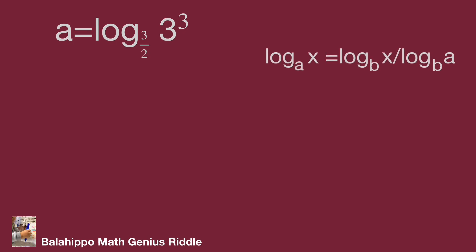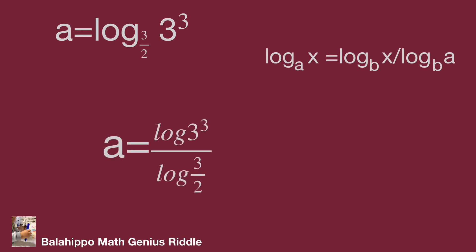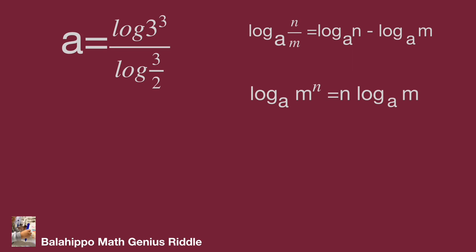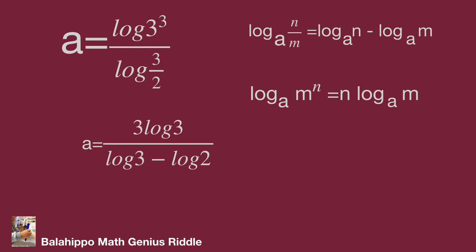Using the logarithm rule: log base A of X equal to log base B of X over log base B of A. We get a equal to log 3 cubed over log 3 over 2. Then applying the logarithm rule log base A of N over M equal to log base A of N minus log base A of M, and the rule log base A of N power N equal to N times log base A of N, we get a equal to 3 log 3 over log 3 minus log 2.